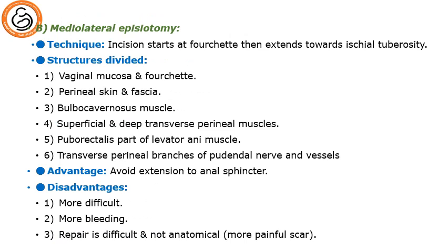For the mediolateral episiotomy, the incision starts at the fourchette and then extends towards the ischial tuberosity. The structures divided are the vaginal mucosa and fourchette, the perineal skin and fascia, the bulbocavernosus muscle, the superficial and deep transverse perineal muscle, and may extend to the puborectalis part of the levator ani. The advantage is it avoids extension to the anal sphincter. The disadvantages are it is more difficult, more bleeding, the repair is difficult, it is not anatomical, and produces a more painful scar.